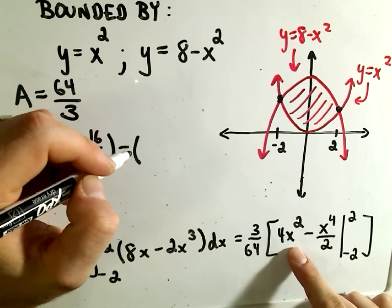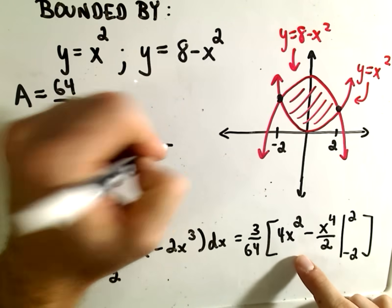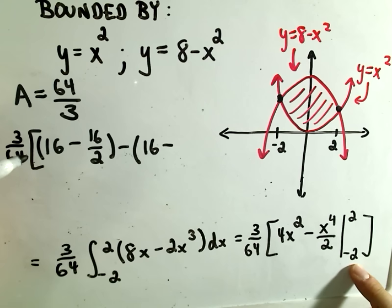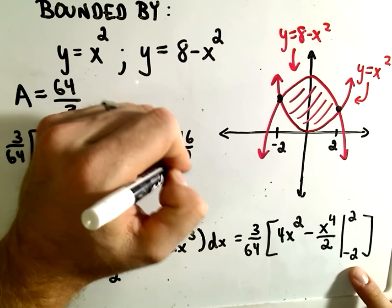When you plug -2 in, we'll get (-2)² which is 4, times 4 gives us 16. When we plug -2 in, we'll get (-2)⁴ which is 16/2.